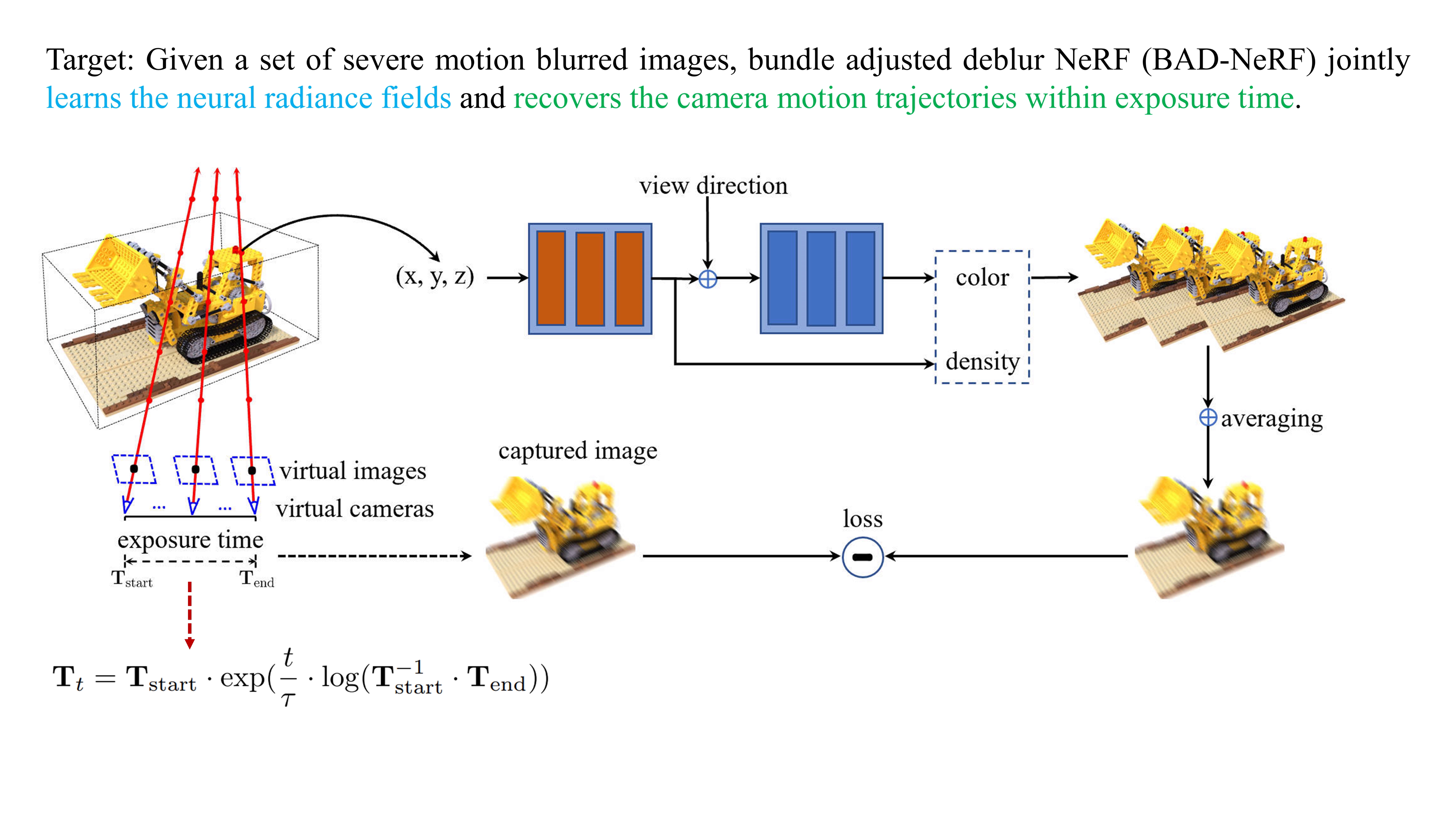Finally, the parameters of the network and the motion trajectories are jointly optimized by maximizing the photometric consistency between the synthesized blurry images and real blurry images.